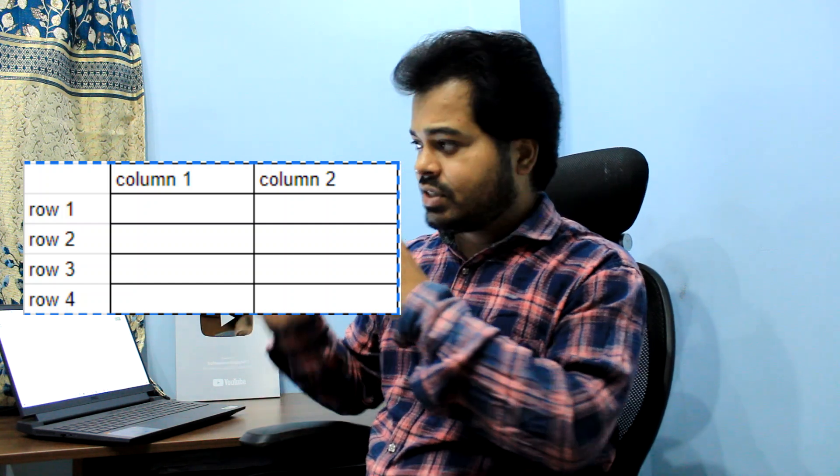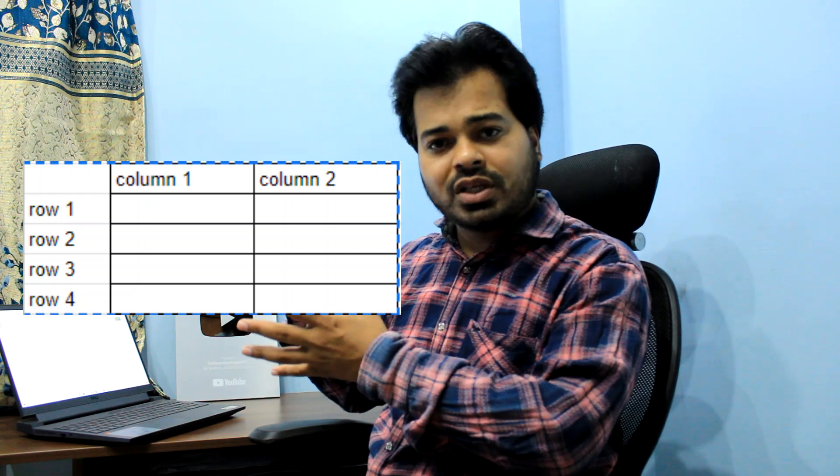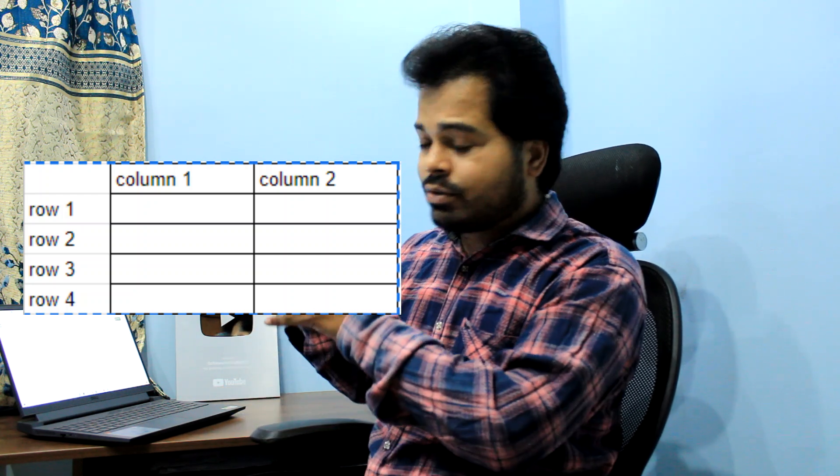I can fetch the data — fetching the data means I can read the data, I can delete the data, I can update the data, and I can also create data. This is what DBMS is. In a future video I'm going to talk separately about what exactly is DBMS and show you practically how it looks like. Just because I'm talking about database and DBMS, I should also talk about what exactly is RDBMS.